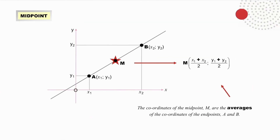The midpoint formula. Most important here is to realize that the coordinates of the midpoint M are the averages of the coordinates of the endpoints A and B. This explains why there are plus signs and not minus signs. The coordinates of the midpoint are also halfway between the coordinates of the endpoints and can often just be written down by inspection.